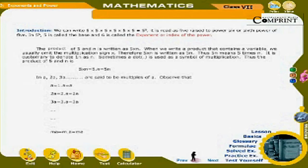a, 2a, and 3a are said to be the multiples of a. Observe that a = 1·a = a; 2a = 2·a = 2a; 3a = 3·a = 3a; and ma = m·a = ma.